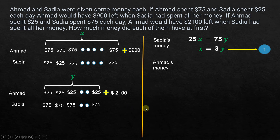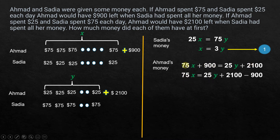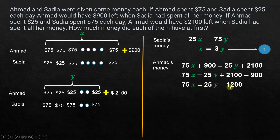Now let's look at Ahmed's money. In scenario one, $75 times X days plus $900 remaining equals his total money. In scenario two, $25 times Y days plus $2,100 remaining equals the same total. So: 75X + 900 = 25Y + 2100. Subtracting 900 from both sides gives 75X = 25Y + 1200.